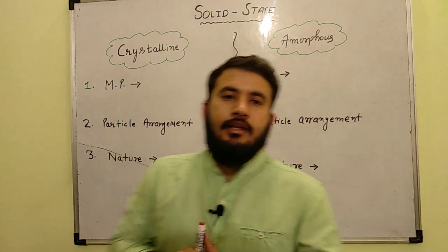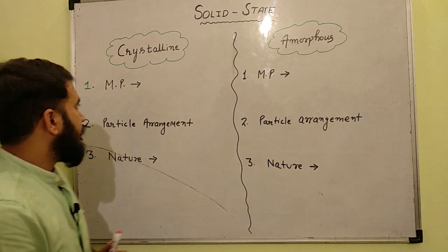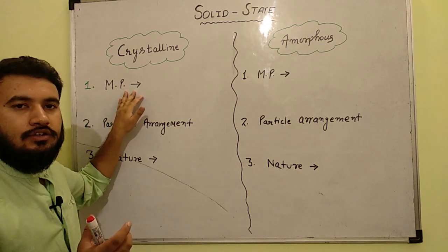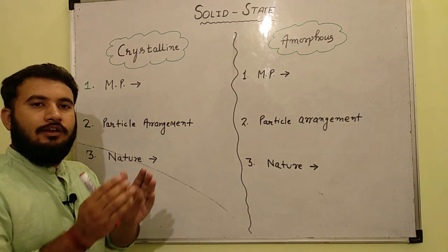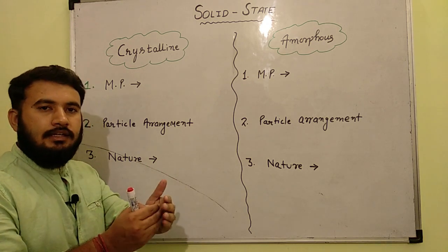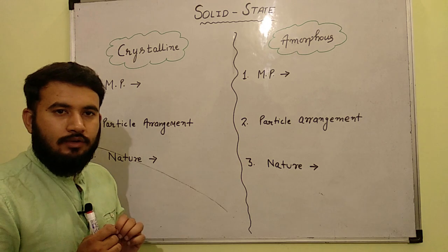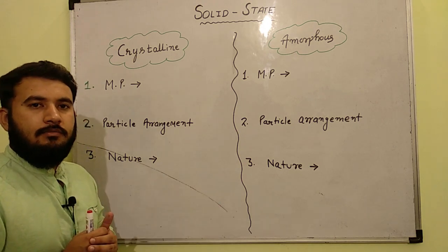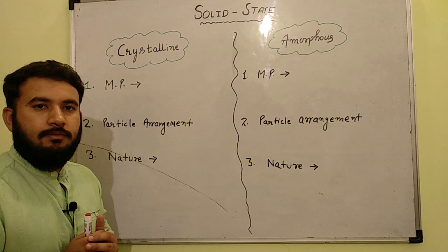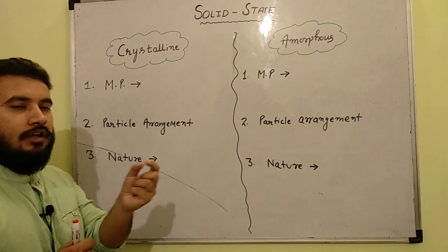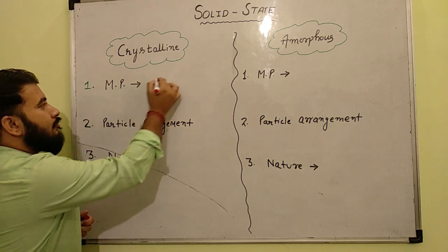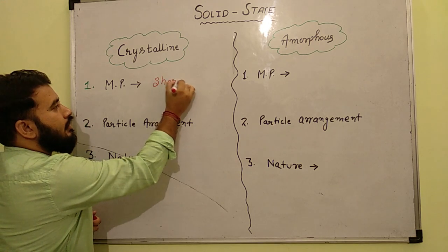So the first property that we are taking here is melting point. Now crystalline solids have a sharp melting point, like NaCl melting point has a fixed value. The melting point will be fixed at a particular temperature. Like in this case, quartz melting point will be fixed at a particular temperature. So the melting point is sharp melting point.